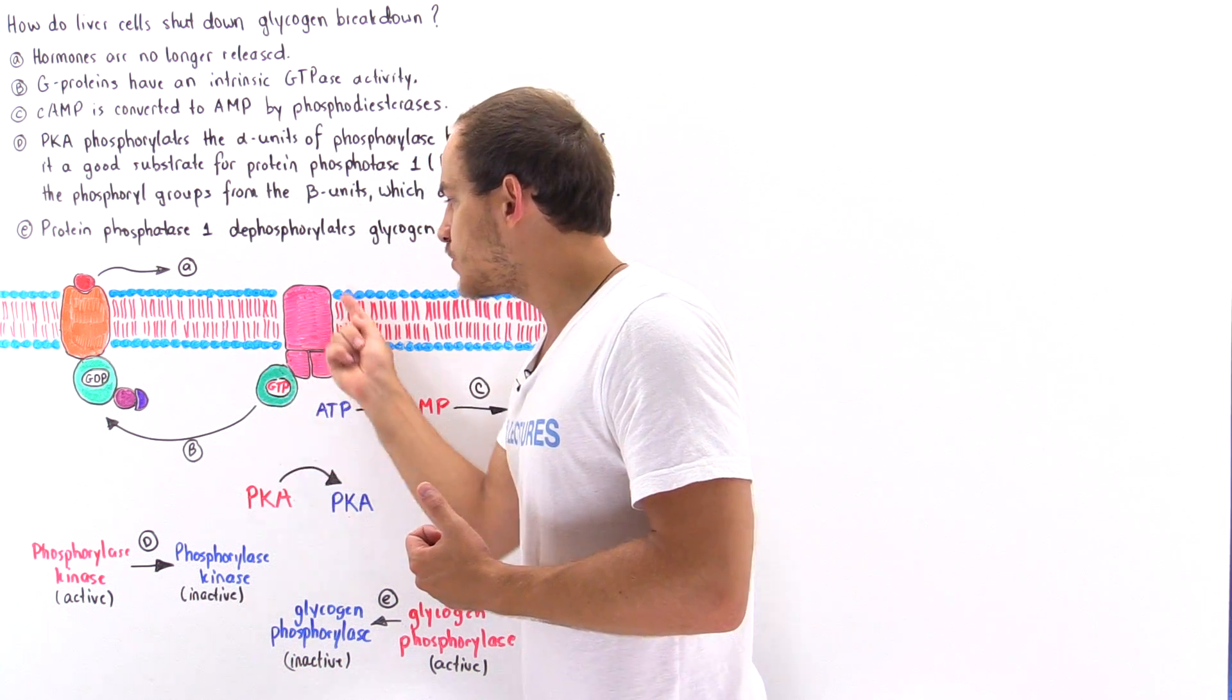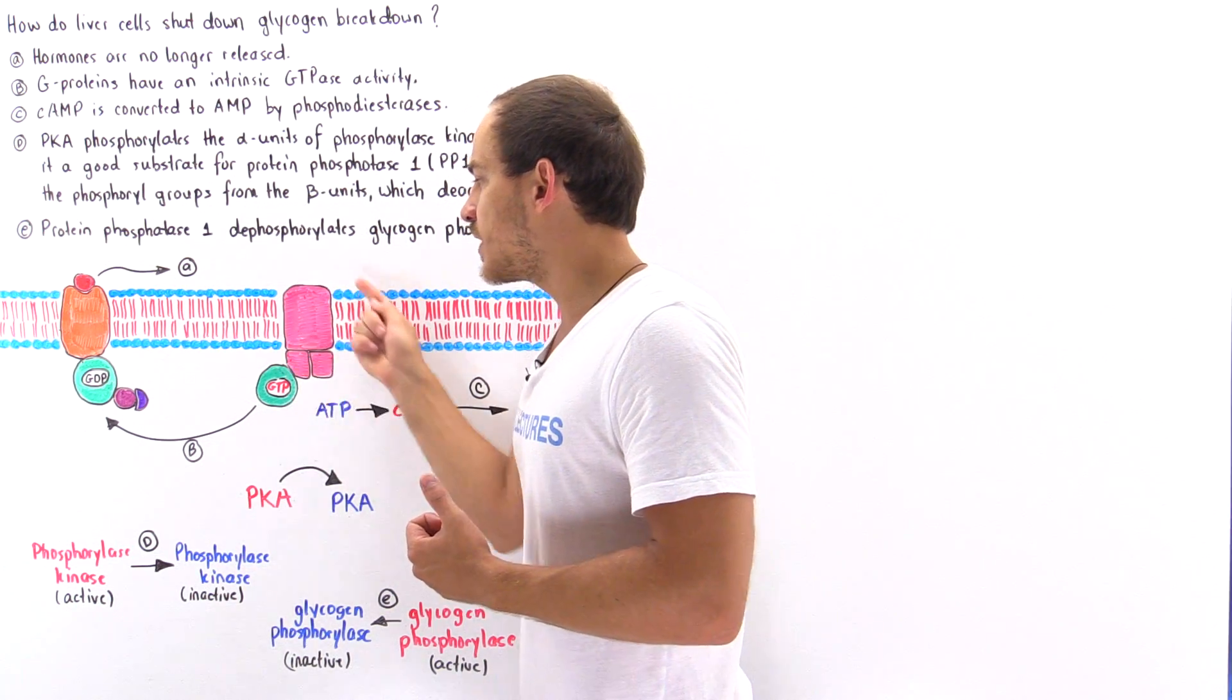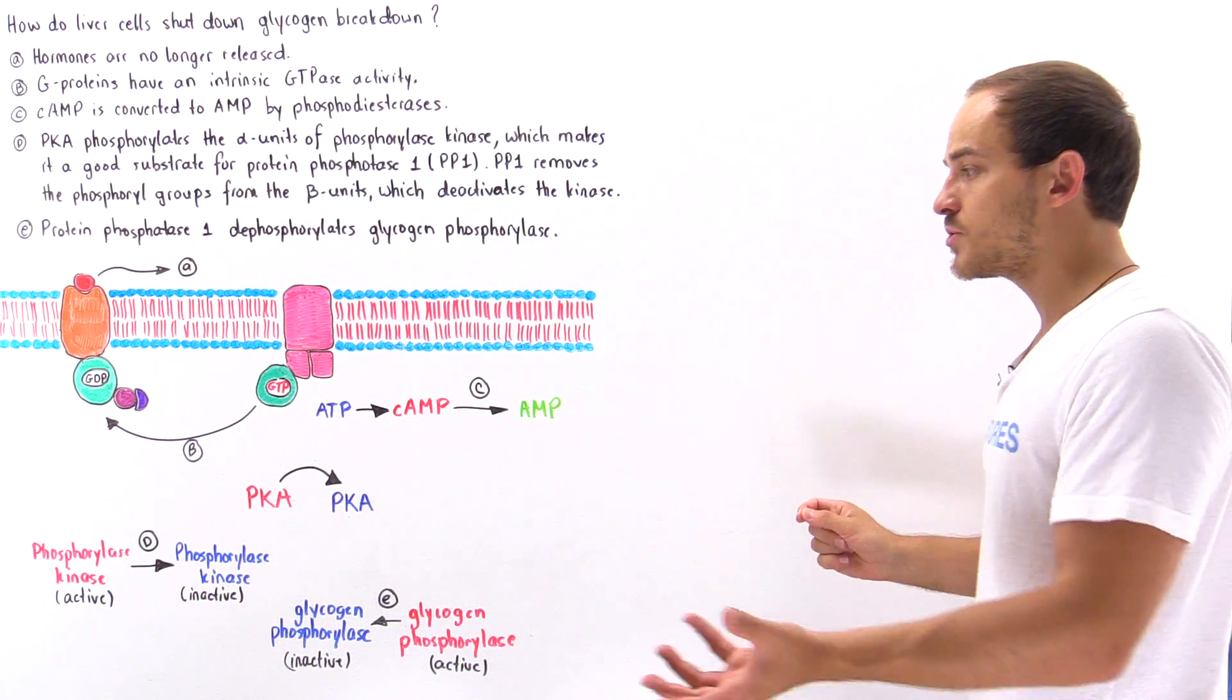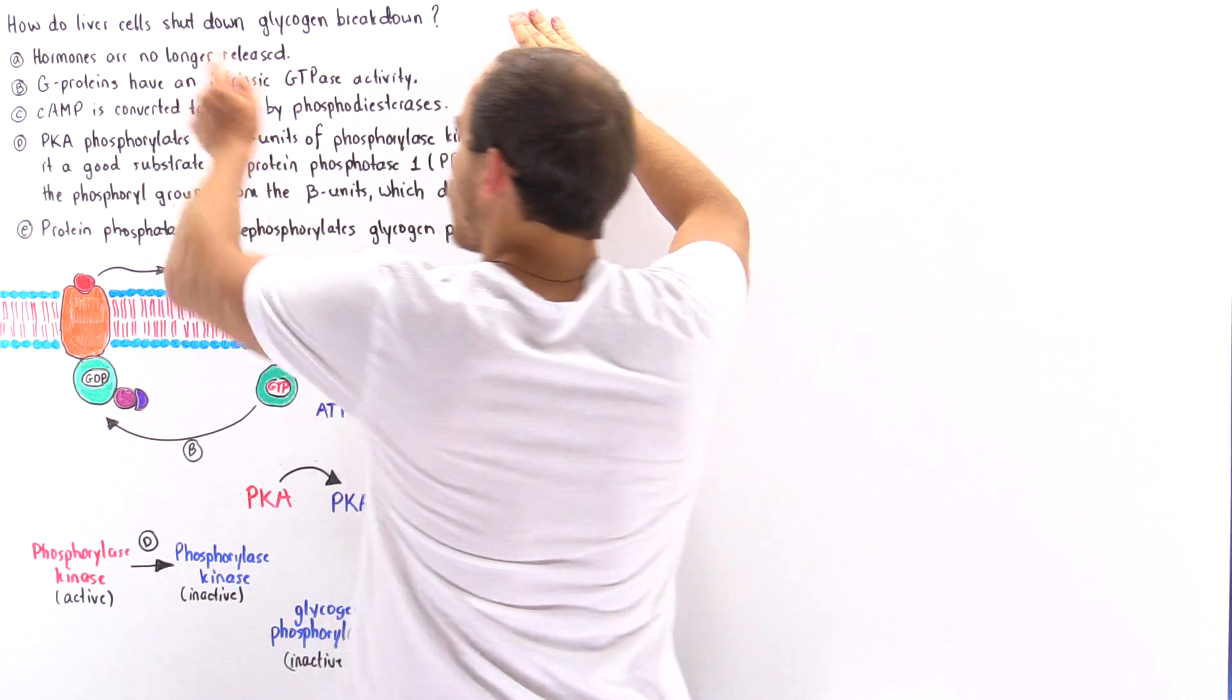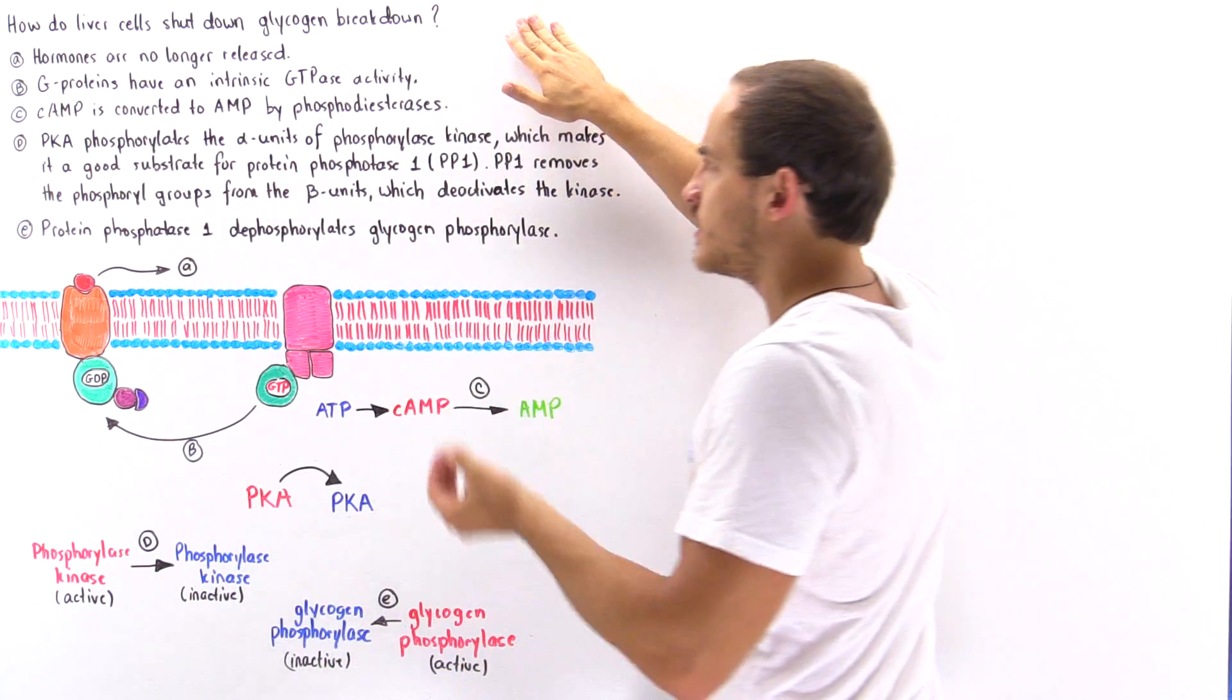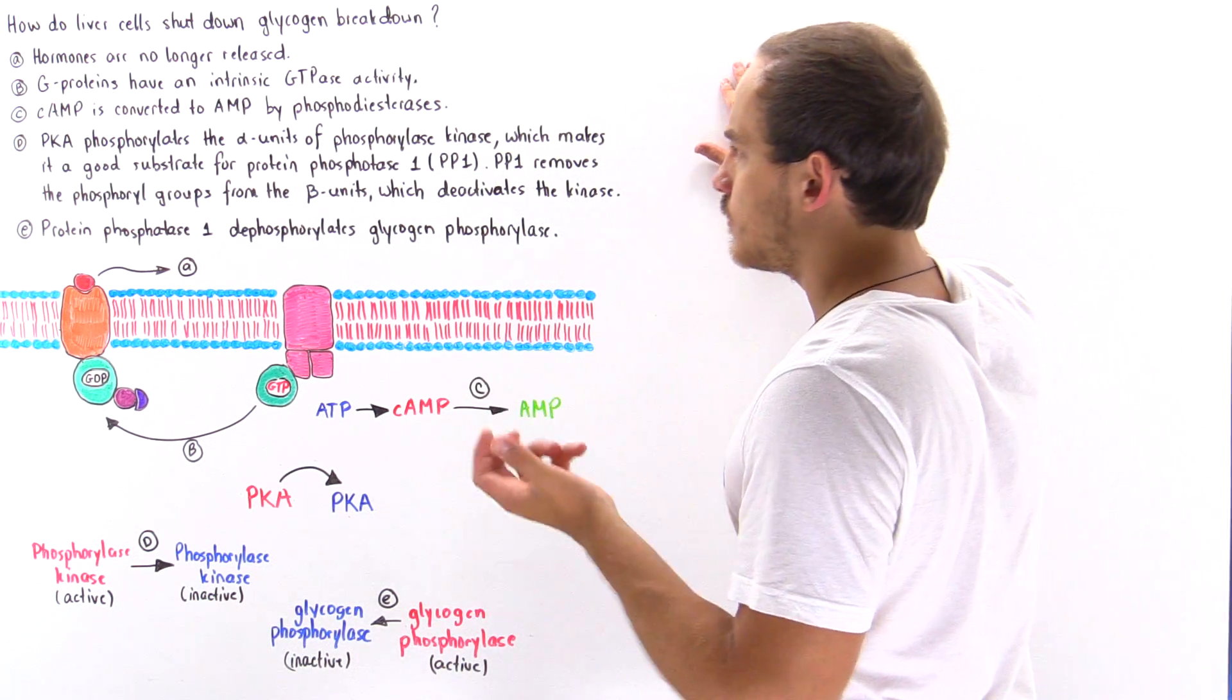Once the G protein dissociates from adenylate cyclase, that turns off the catalytic activity of adenylate cyclase and that stops transforming ATP into cAMP. So hormones are no longer released and G proteins have an intrinsic GTPase activity which allows them to basically turn themselves off.